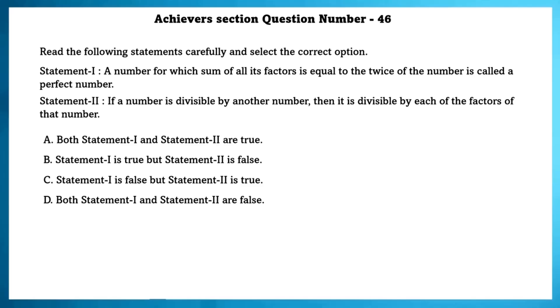Achieve section question number 46. Read the following statements carefully and select the correct option. Statement 1. A number for which the sum of all its factors is equal to twice of the number is called a perfect number. Yes, it is true. Statement 2. If a number is divisible by another number, then it is divisible by each of the factors of that number. Yes, this is also true.